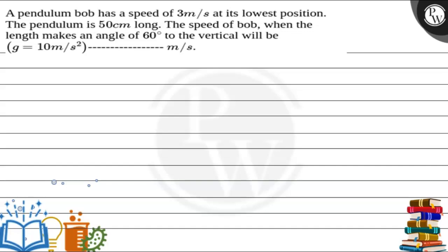In this question, the pendulum bob has a speed of 3 m per second at its lowest position. The pendulum is 50 cm long. We need to find the speed of the bob when the pendulum makes an angle of 60 degrees with the vertical. We take g = 10 m per second squared.